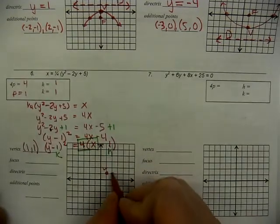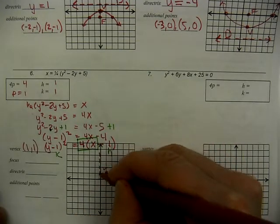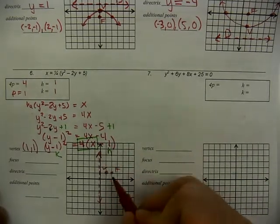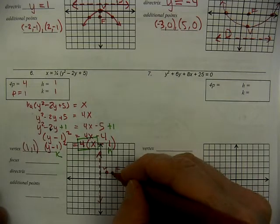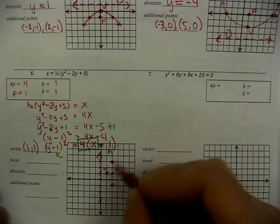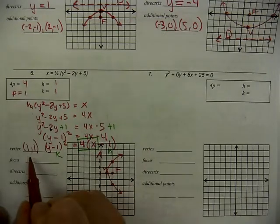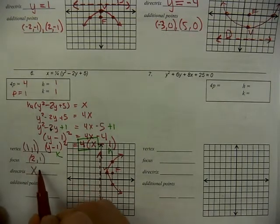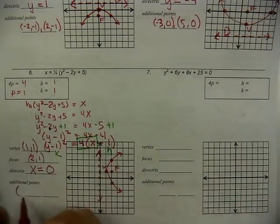We need P: 4P = 4, so P is one. One unit to the right is the focus. One unit to the left is the directrix — it's vertical this time, because the parabola opens away from the directrix. Take P and double it: two units above and two units below the focus set the two additional points. The focus is at (2, 1), the directrix is x = 0, and those are the additional points. We had to complete the square on this one.